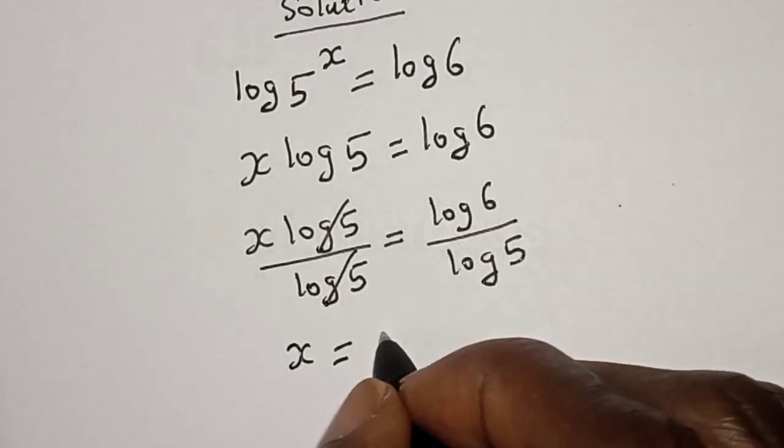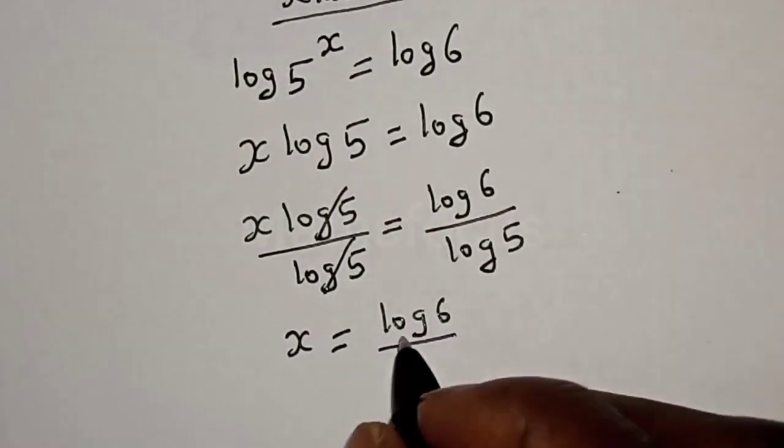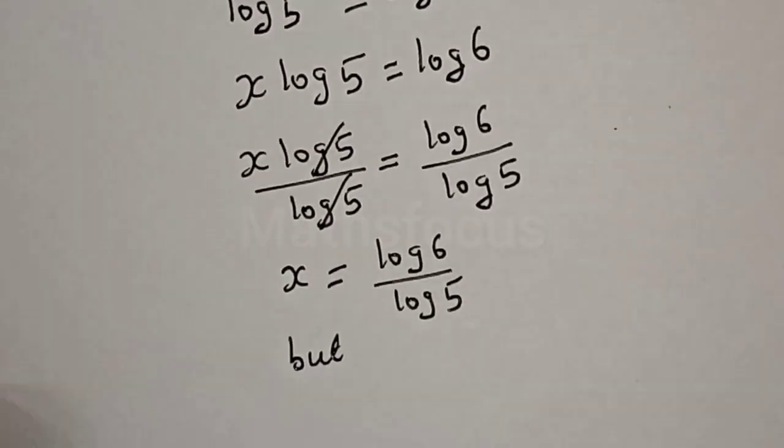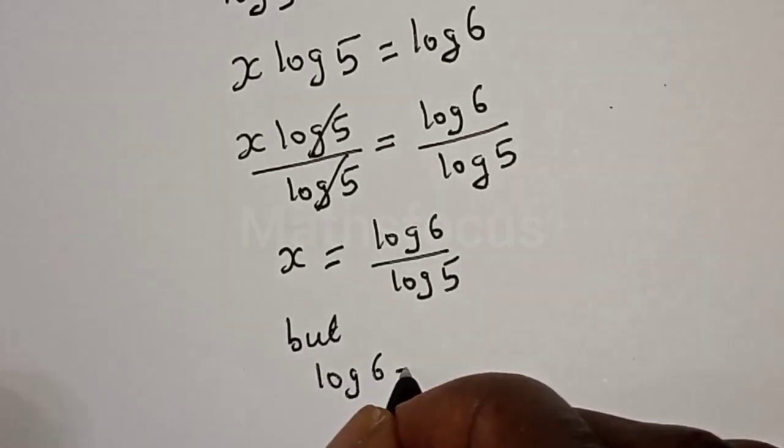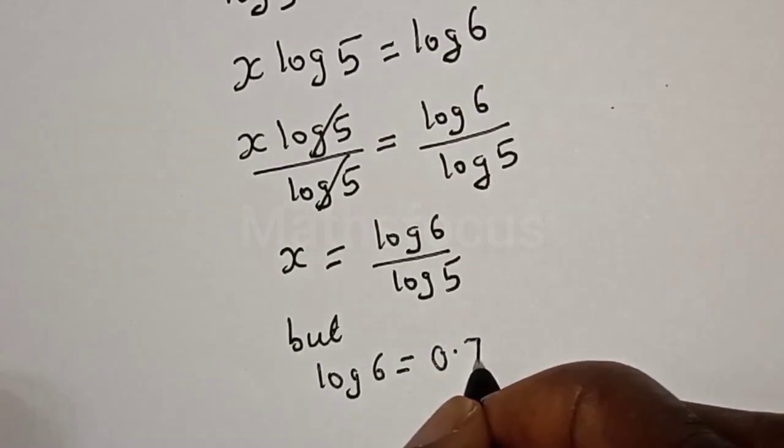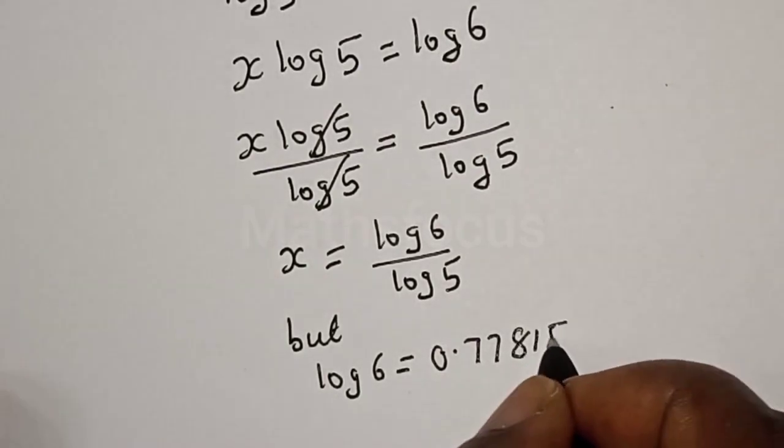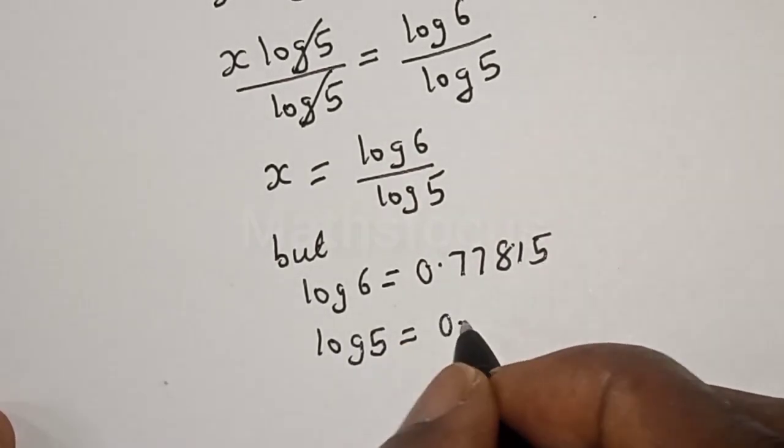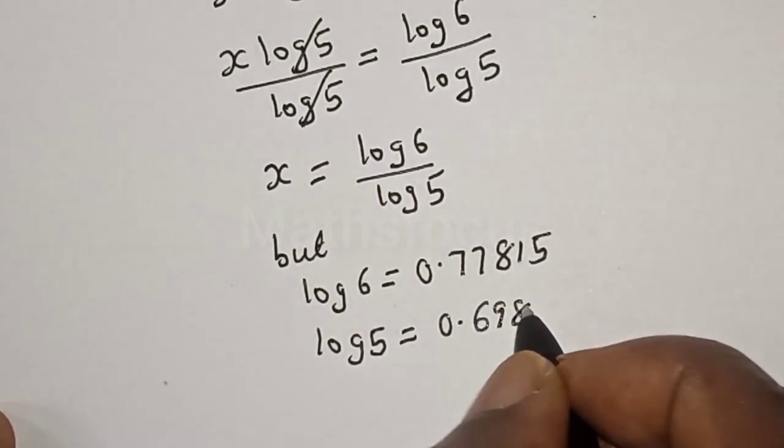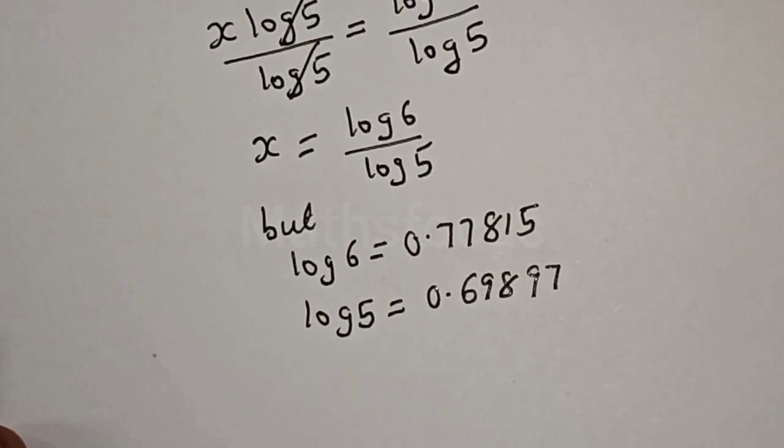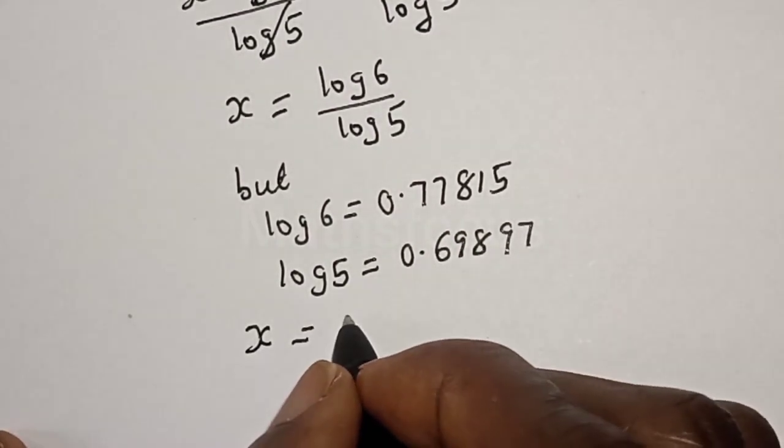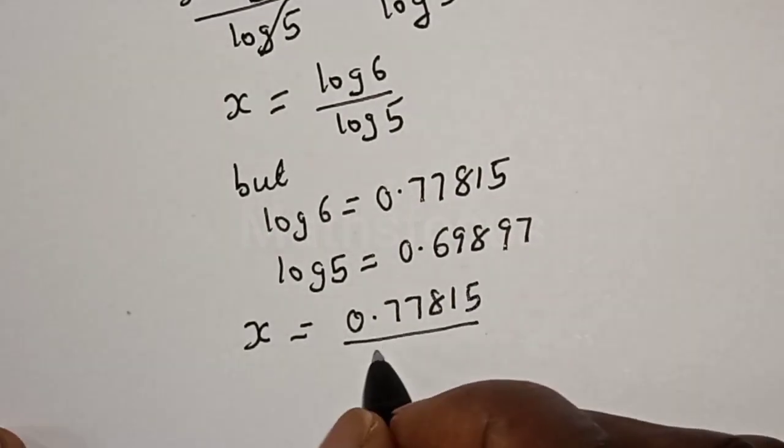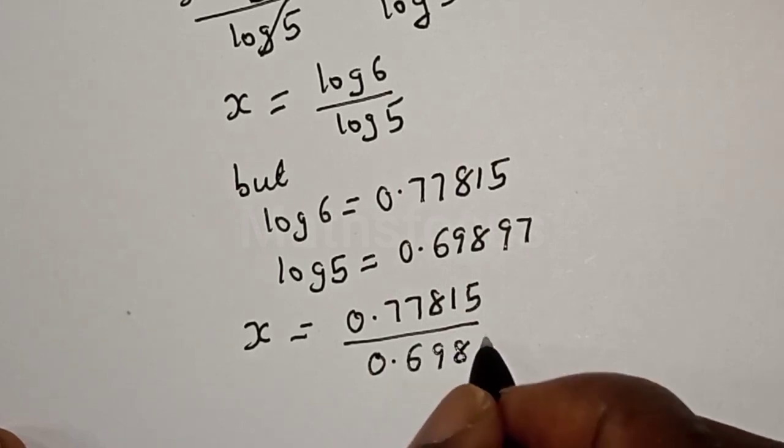s is equal to log 6 over log 5. But log 6 is equal to 0.77815, and log 5 is equal to 0.69897. Then, s is equal to 0.77815 divided by 0.69897.